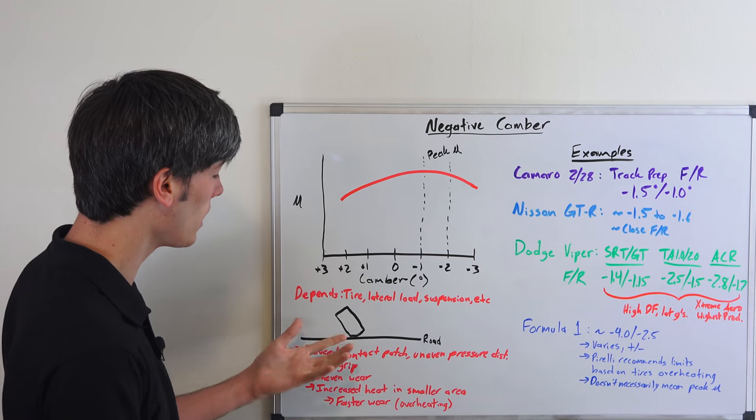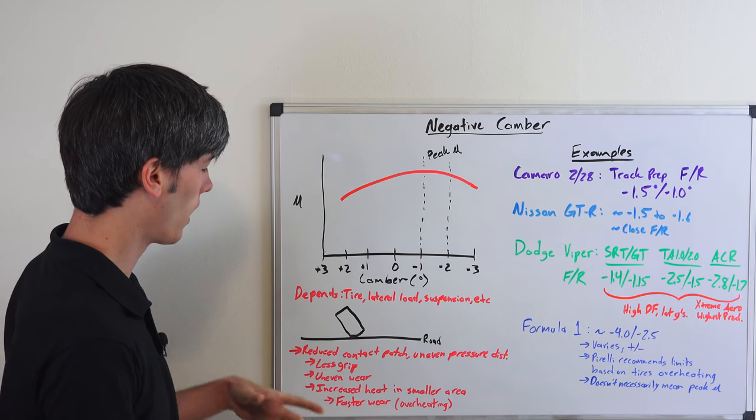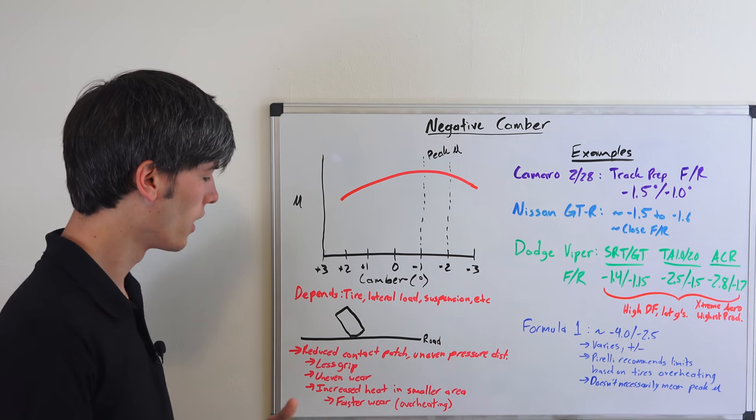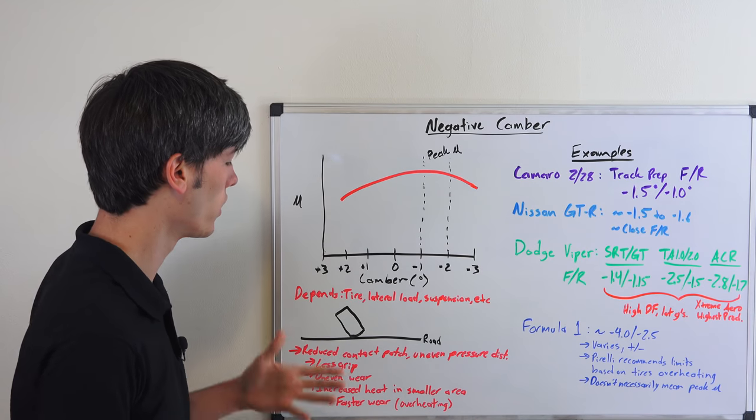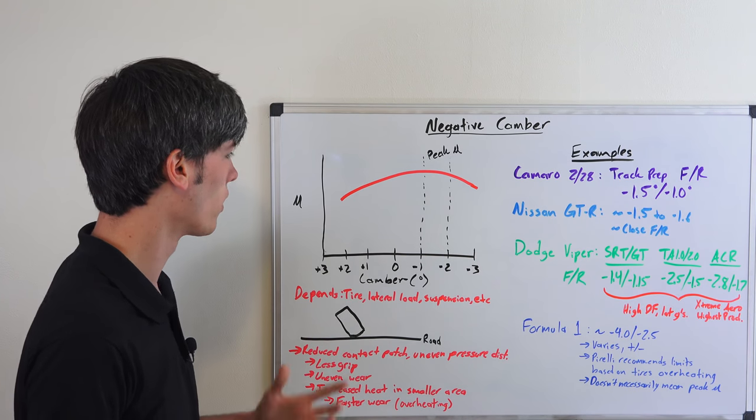You're going to have increased heat on that section that's running on the road. That increased heat, because there's more heat in a smaller section than being distributed across the entire tire, you can have faster wear. If you are actually tracking it and using it at peak grip frequently, it's going to wear quite a bit faster.